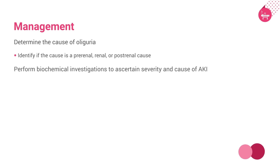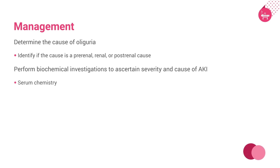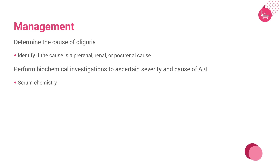Perform biochemical investigations to ascertain severity and cause of acute kidney injury (AKI). Serum chemistry including sodium, potassium, creatinine, blood urea nitrogen, calcium, magnesium, phosphate, uric acid, and creatinine phosphokinase if rhabdomyolysis is suspected.